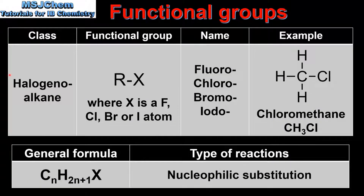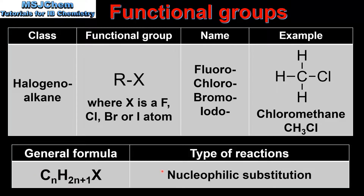The last example we look at are the halogenoalkanes. The functional group name depends on which halogen atom is part of the compound. The functional group is a halogen atom bonded to an alkyl group, where X can either be an atom of fluorine, chlorine, bromine or iodine. An example is chloromethane. The general formula is CnH2n+1X. Halogenoalkanes undergo nucleophilic substitution reactions. In the next video we'll be looking at how to identify functional groups in different structural formulas.